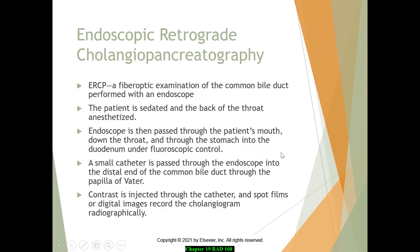Endoscopic retrograde cholangiopancreatography (ERCP) uses an endoscope — a camera — passed through the patient's mouth, down the throat, into the stomach. A small catheter is passed through the scope to the distal end of the common bile duct, contrast is injected, and spot films or digital images are captured.